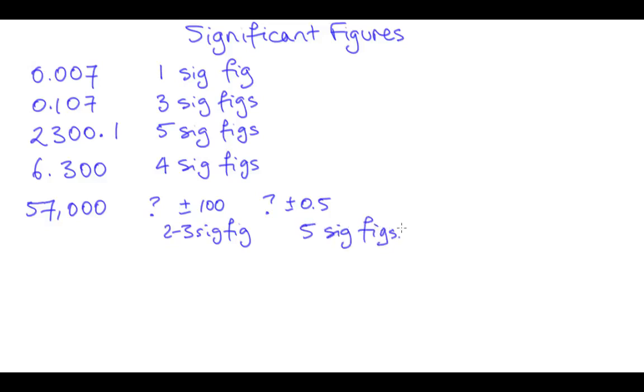So one way to get around this ambiguity is to specify the uncertainty, as I just did. And another way is to use what's called scientific notation or standard form. So I can write 57,000 as 5.7 times 10 to the power of 4. And if I write it like that, then I know there are only two significant figures here.